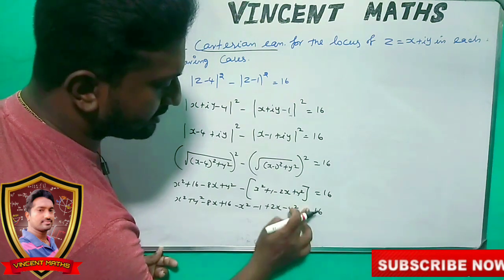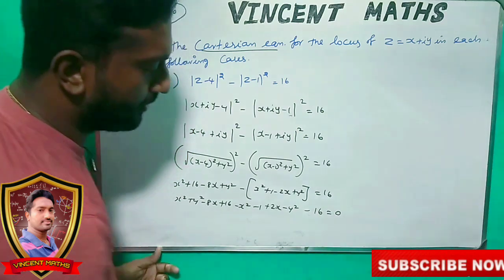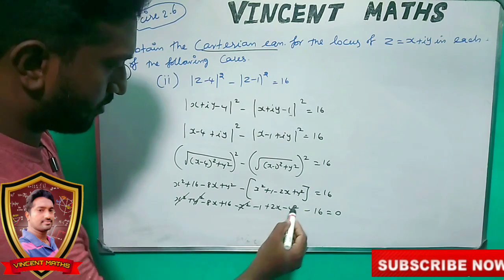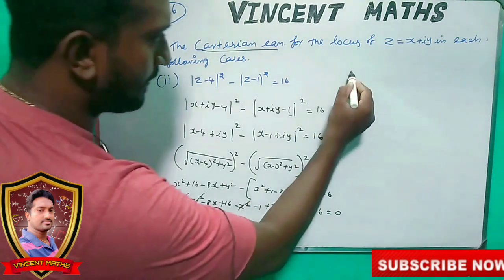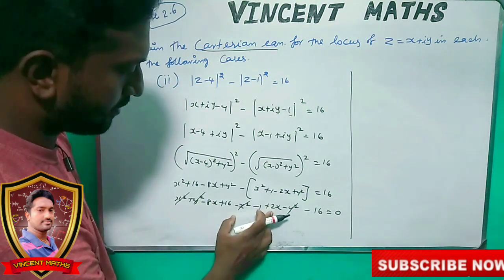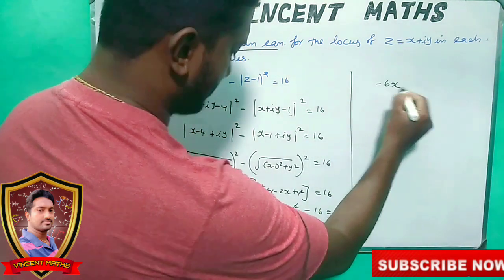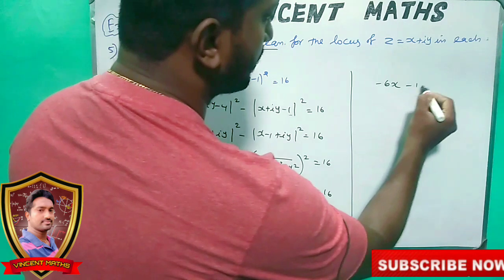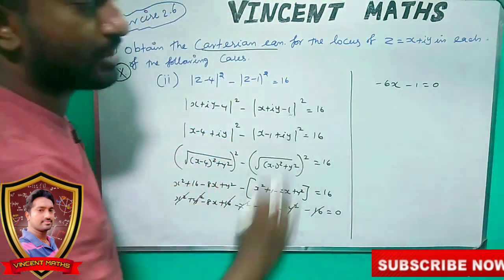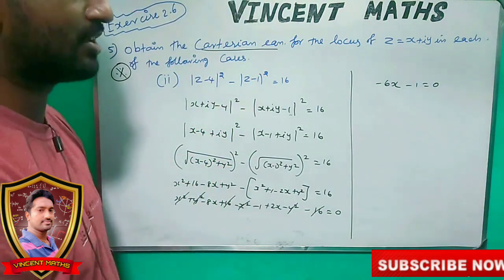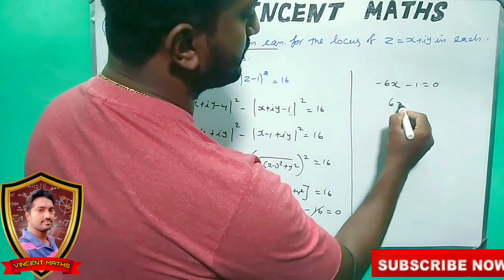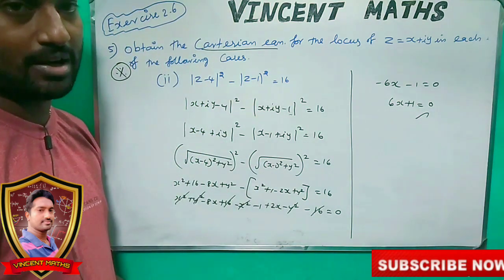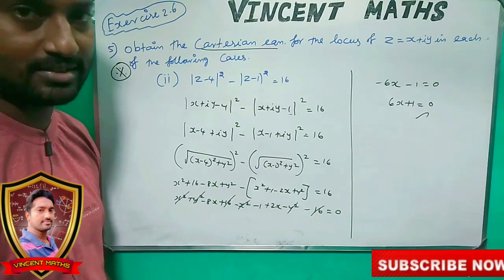x squared plus y squared minus 8x plus 16 minus x squared minus 1 plus 2x minus y squared equal to 16. We add minus 16 equal to 0. x squared minus x squared and y squared minus y squared cancel. Minus 8x plus 2x gives minus 6x. Plus 16 minus 16 cancels. Minus 1 equal to 0: minus 6x plus 1 equal to 0. This is the Cartesian form. It is very easy to get. Thank you so much!